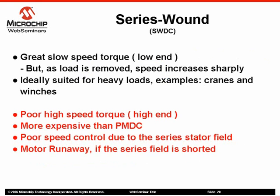Now the motor speed will decrease and torque will increase to overcome the load. Series wound brush DC motors have great low speed or low end torque, but if the load is removed, speed will sharply increase. This makes these motors ideally suited for high torque applications such as cranes and winches, because the current in both the stator and rotor increases under load. Some drawbacks are that they have poor high speed or high end torque characteristics, thus they must have a load connected to prevent damage under high speed conditions. They are more expensive than permanent magnet brush DC motors and do not have precise speed control characteristics. They also have the potential to go into motor runaway if the series stator field is shorted — a very dangerous condition that can lead the motor to literally break apart.